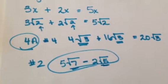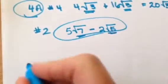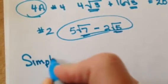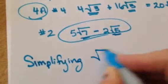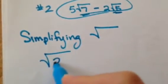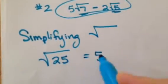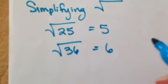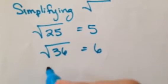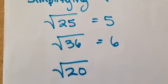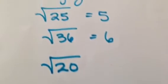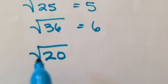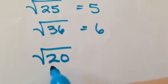Let's move on and talk about simplifying square roots. You guys know that if you have the square root of 25, it's 5 — because 5 times 5 is 25. Or the square root of 36 is just 6. But what if you've got something like the square root of 20? The square root of 20 is not perfect. I don't want any decimals at all — don't ever give me decimals. You want to think: is there a perfect square in 20?